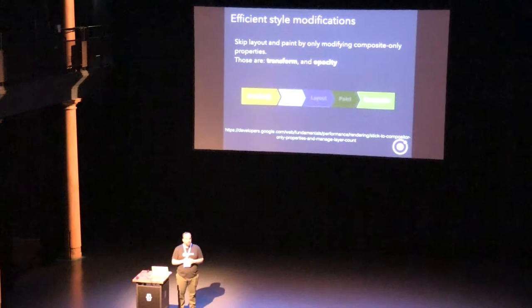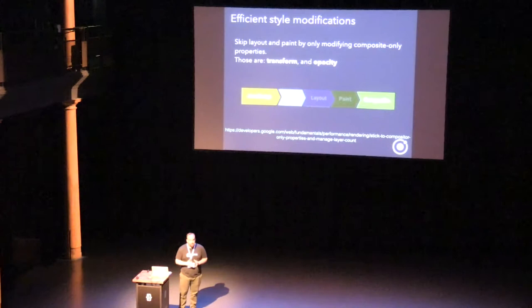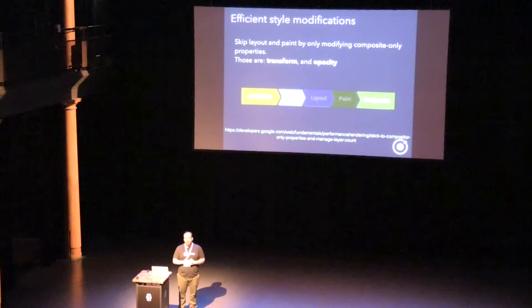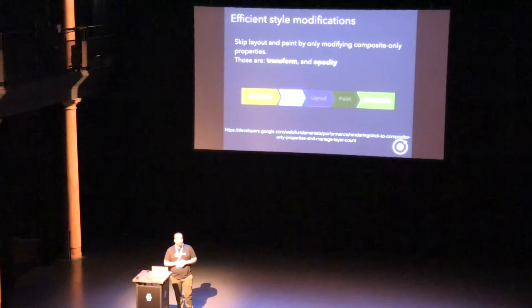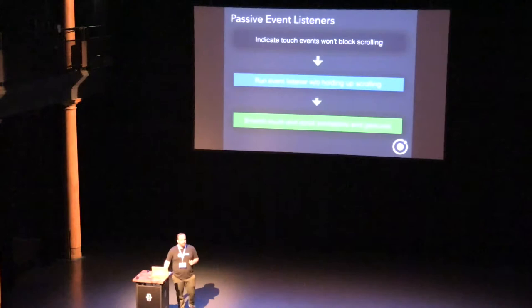The FastDOM demo lets you compare side-by-side the force-synchronous rendering approach versus the batching technique — it's many times faster. The other technique that should be in our toolbox is only modifying properties that go directly to the compositing engine, skipping layout and paint. The only two properties you can modify to skip those stages are transform and opacity. Animating things like margin-left or the left property causes layout and paint to be rerun, which is slow. For fast animations, only modify transform and opacity.